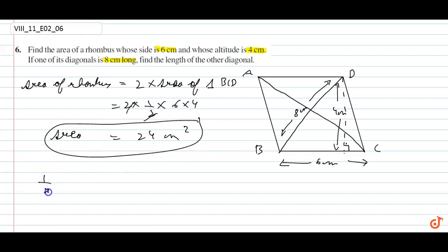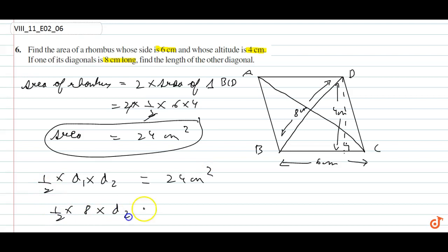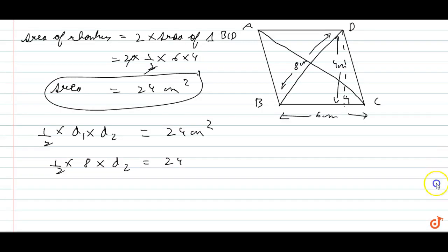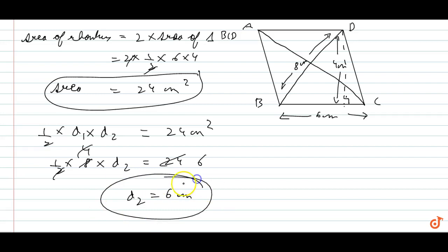We also know that the area of a rhombus equals half into d1 into d2. So half into d1 (which is 8) into d2 equals 24. Therefore 4 times d2 equals 24, giving d2 equals 6 cm.